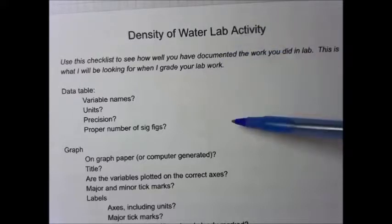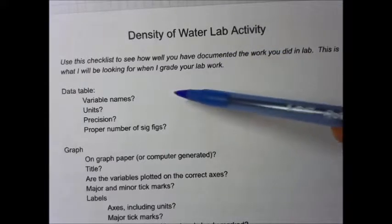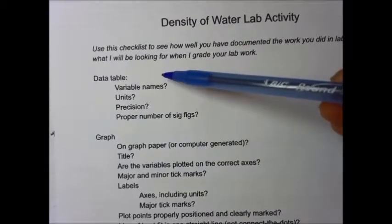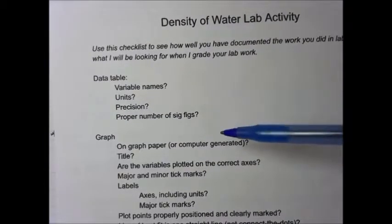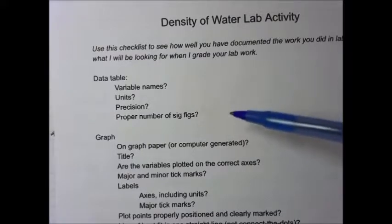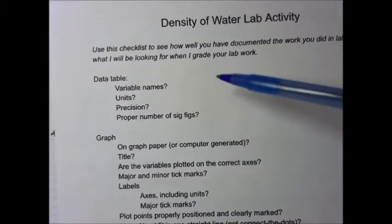Basically this first section of the document is a checklist for everything that I want to see for your data table. So if you could have a copy of this with you or have it on a screen while I go through, it would really help. But just real quick,